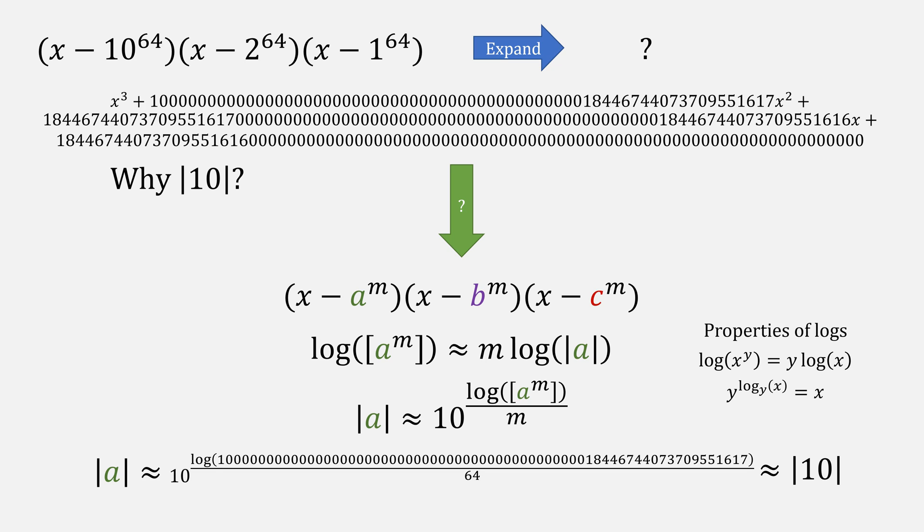But why was it absolute value of 10 instead of just 10? Keep in mind that when raising to an even power we actually lose whether our number was positive or negative. In this case 64 is even and we'll just always assume that m is an even number.